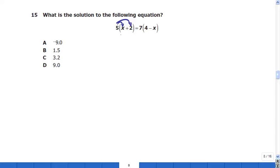So 5 times x, which is 5x, plus 5 times 2, which is 10 on the left. Right side, 7 times 4 minus 7 times x. 28 minus 7 times x, 7x, good.